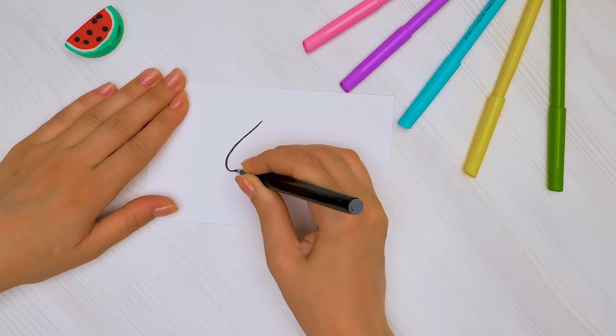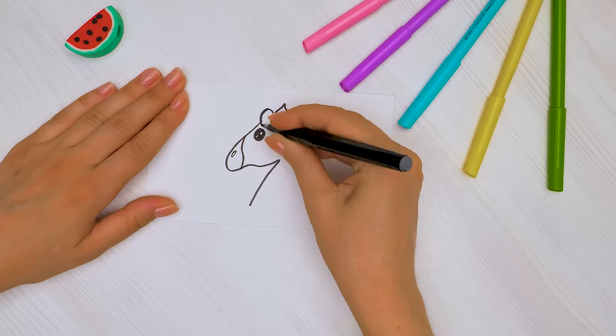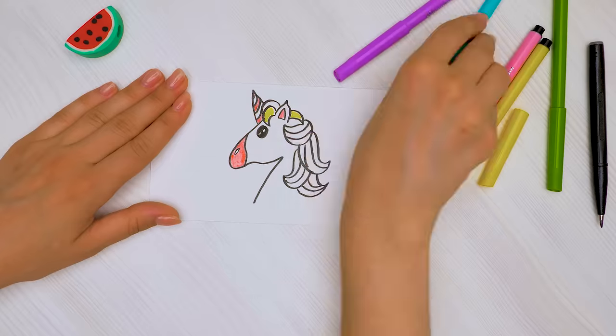I'll draw a unicorn on the white paper. Oh, I love drawing magical creatures! Do you guys? Next, I'll color it brightly.